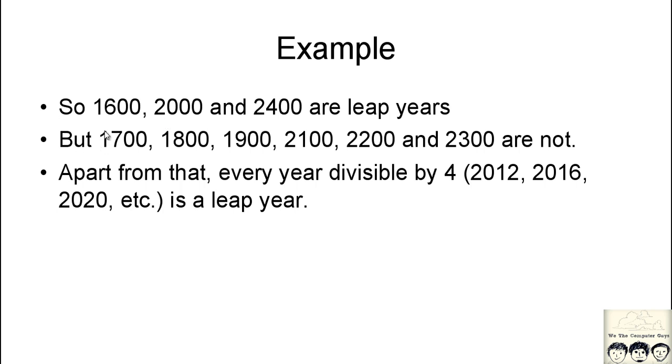We know that every 400th year is a leap year, so 1600, 2000, and 2400 are leap years. But 1700, 1800, 1900, and so on are not leap years. They are divisible by 4, but the rule stated that every 100th year is not a leap year. Apart from that, all other years which are divisible by 4 are leap years, like 2012, 2016, 2020, etc.